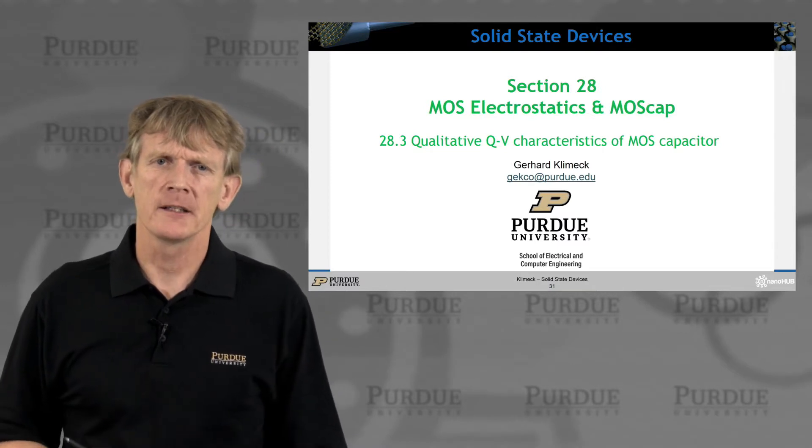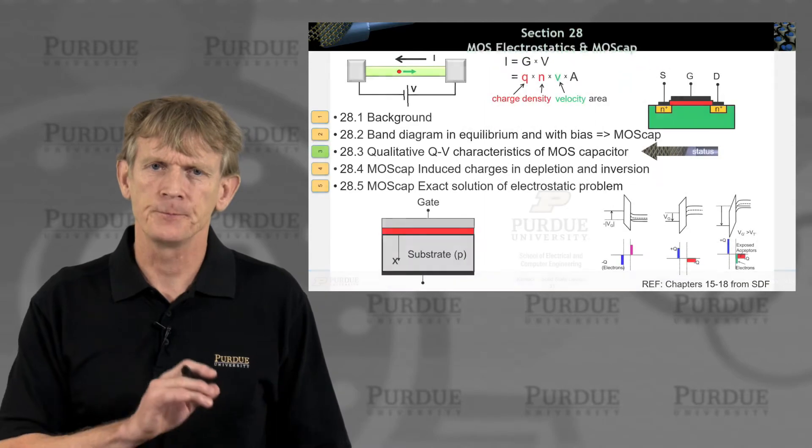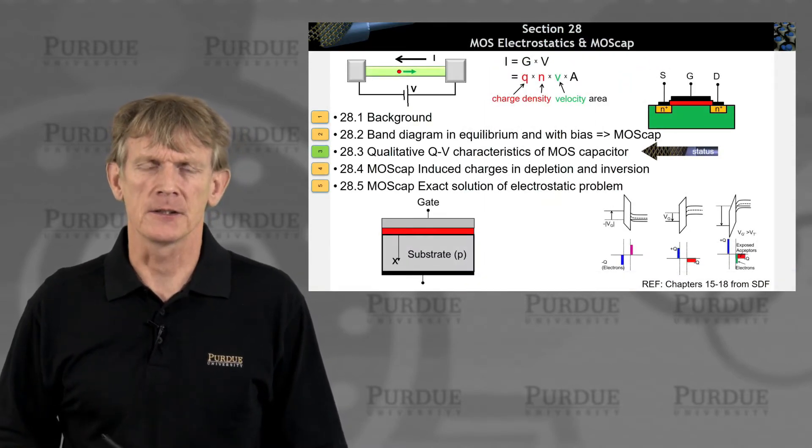Okay, let's look at some qualitative charge voltage characteristics of this MOS capacitor. So what should happen as we apply voltages?